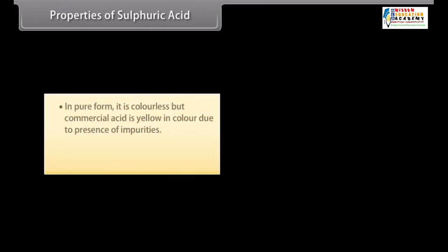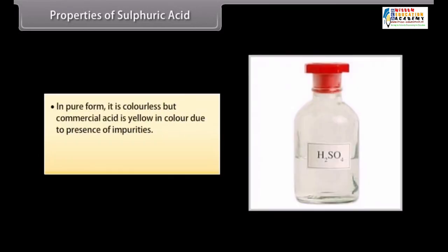Properties of Sulphuric Acid. In pure form, it is colorless, but commercial acid is yellow in color due to the presence of impurities. On coming in contact with the skin, it produces severe burns.